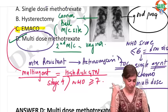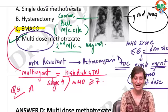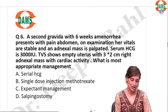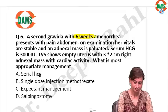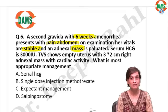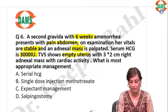If you got question number 5 right, give yourself a tick. Ready for the next question. Your patient has six weeks amenorrhea, has come with pain abdomen. Vitals are stable. An adnexal mass is palpated. Serum HCG is 3000. Transvaginal ultrasound shows empty uterus and an adnexal mass with cardiac activity. What is the most appropriate management?